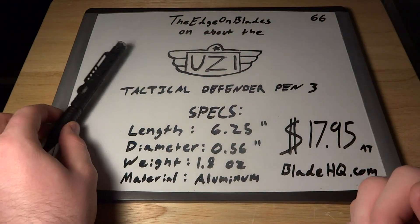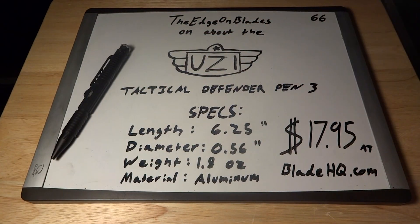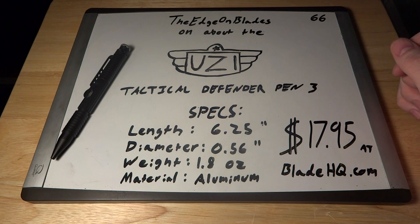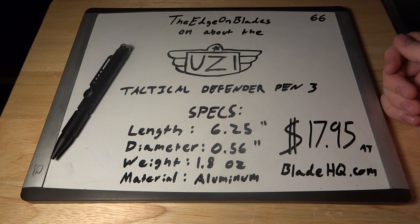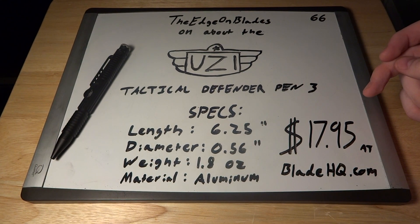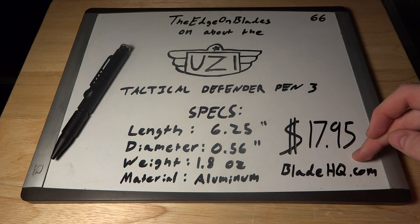Go over some specs real quick. Overall length is 6 1/4 inches, the diameter is a little bit over half an inch, and it weighs 1.8 ounces, so it's a pretty hefty pen. Obviously it's an aluminum body, and I got mine, like I said, at BladeHQ for $17.95.